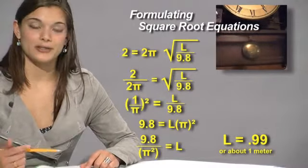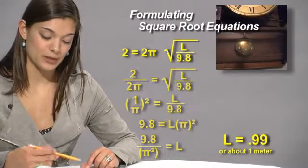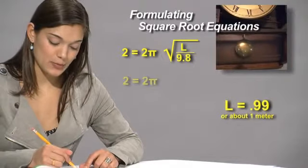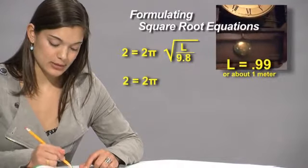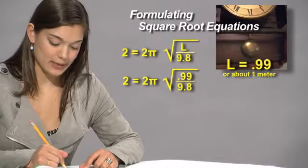Just like any other equation, you can check your answer by plugging that number back into what you got. We can plug back in 2 equals 2 pi times the radical of .99, our answer, divided by 9.8.